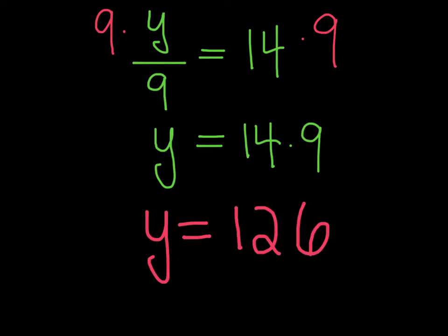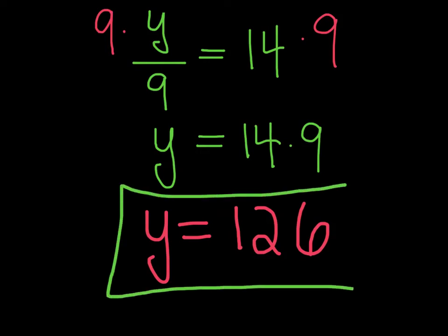I can simplify the right side of the equation and rewrite 14 times 9 as 126. Here, I have successfully found the value of my unknown variable, y equals 126.